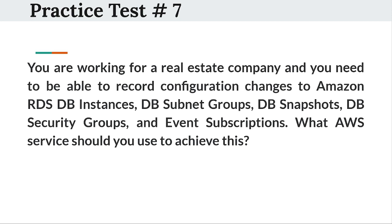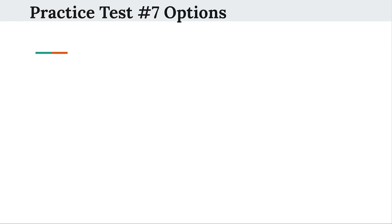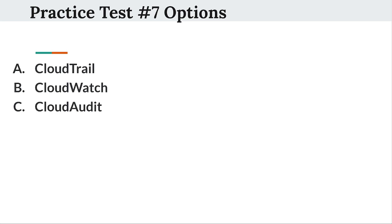So the next question is: You are working for a real estate company and you need to be able to record configuration changes to Amazon RDS DB instances, DB subnet groups, DB snapshots, DB security groups, and event subscriptions. What AWS service should you use to achieve this? Option A: CloudTrail. Option B: CloudWatch. Option C: Cloud Audit. Option D: AWS Config.